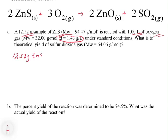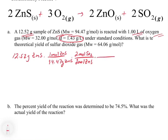Starting with zinc sulfide: 12.52 grams of ZnS with a molecular weight of 94.47 g/mol. From the balanced equation, for every two moles of ZnS we get two moles of SO2 gas. Using the molecular weight of SO2 at 64.06 g/mol, we calculate 8.49 grams of SO2.